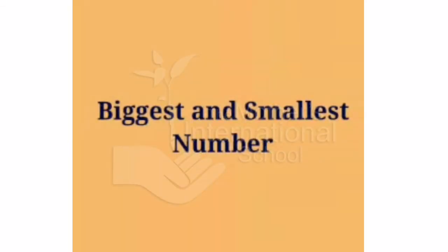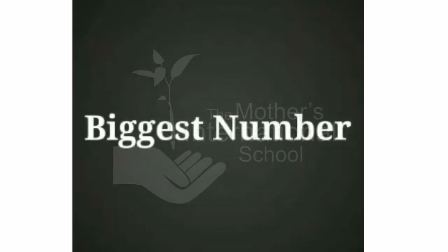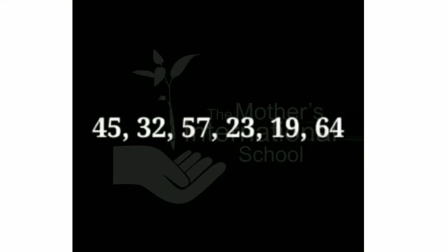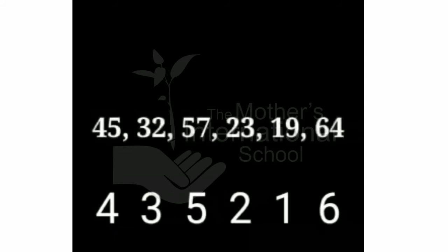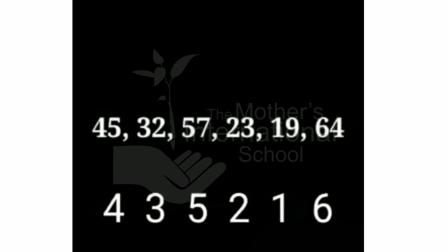Now biggest and smallest numbers. First, biggest numbers — which number is the biggest in the given numbers? Here the numbers 45, 55, 32, 57, 23, 19, and 64 are given. We take the first digit of the numbers and find the biggest. 6 is the biggest from all, so the biggest number is 64.